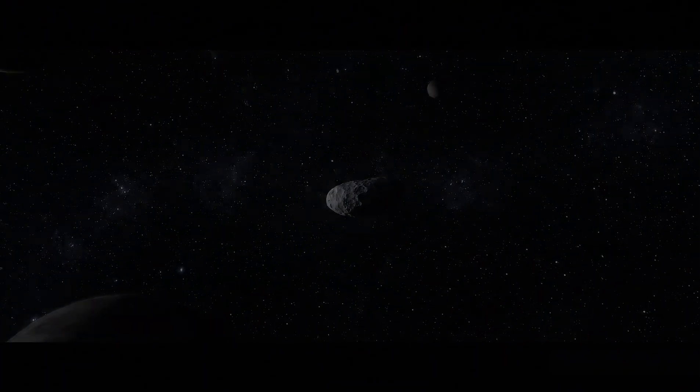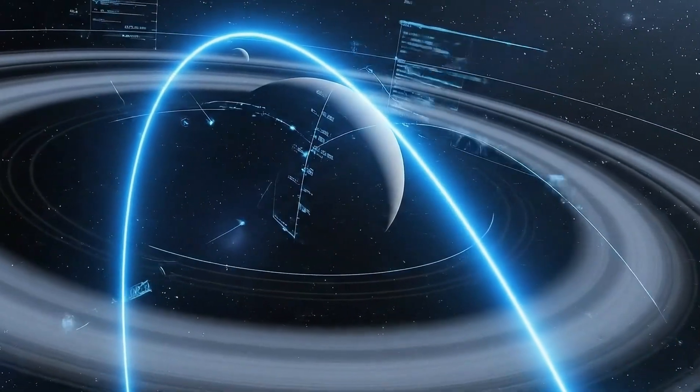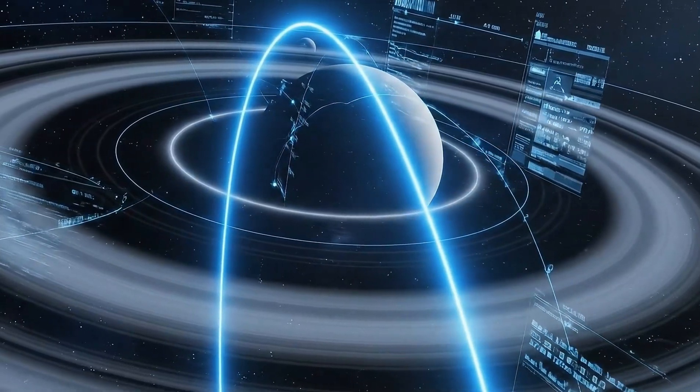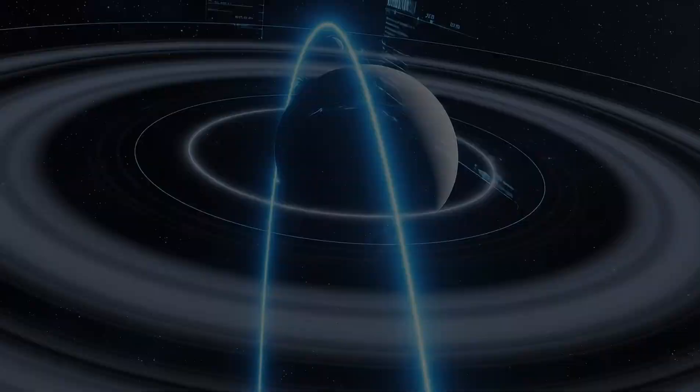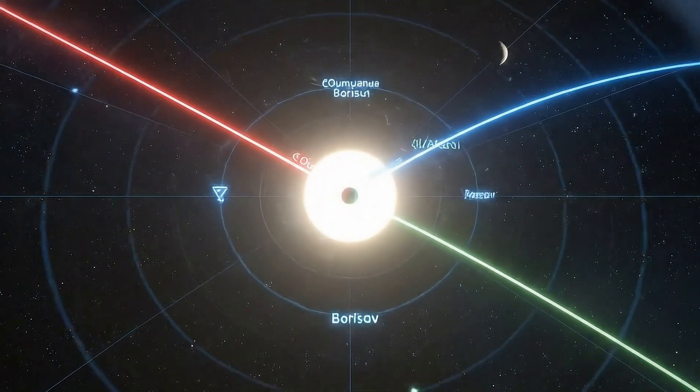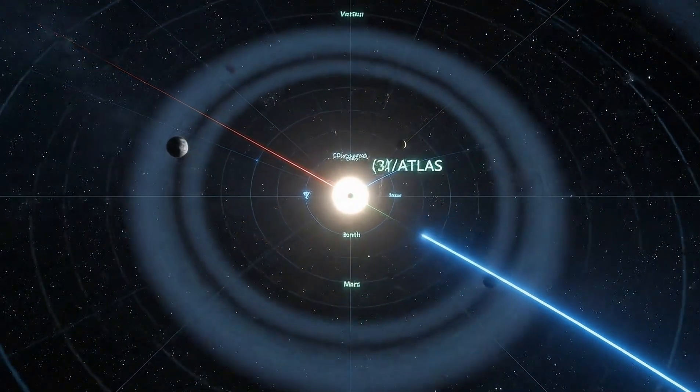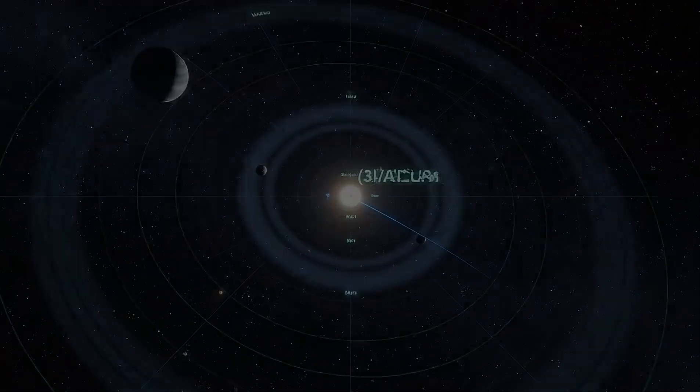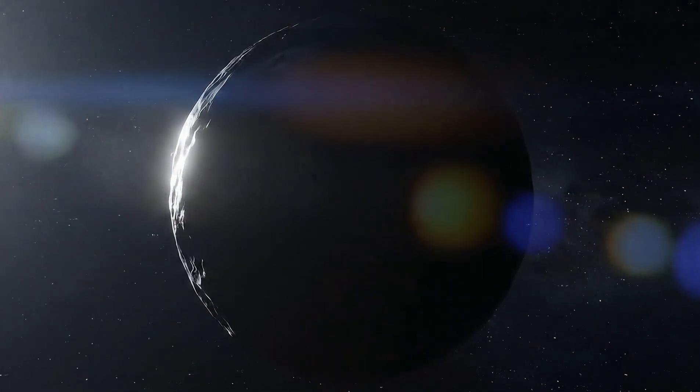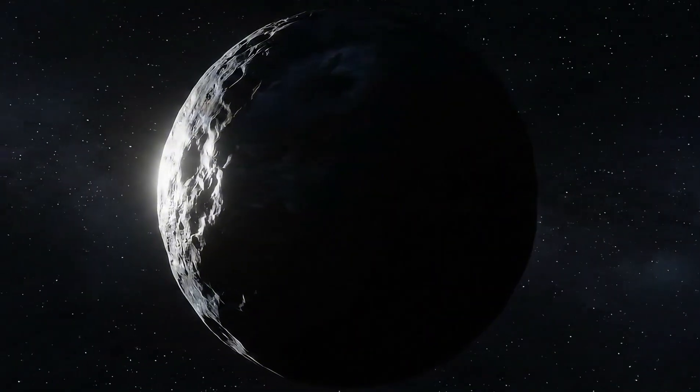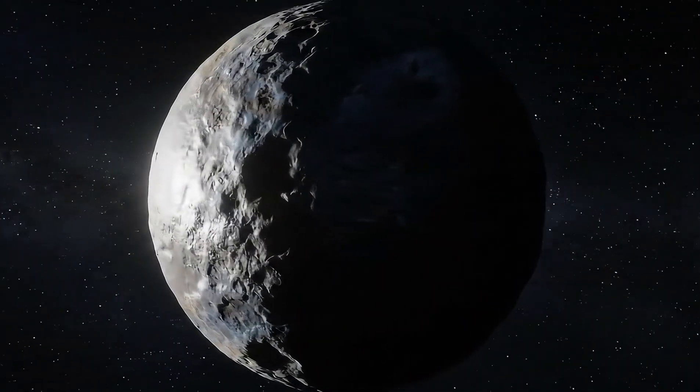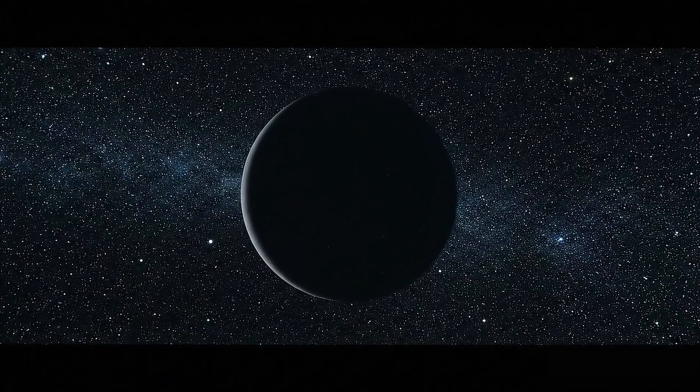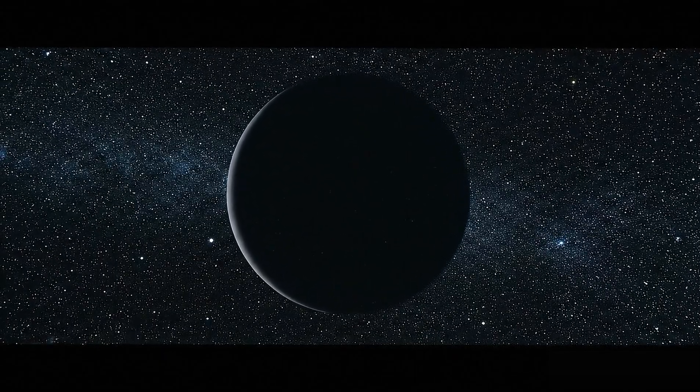So what exactly is 3i Atlas? Most astronomers agree it's a fragment of something ancient—maybe a comet that formed in a long-dead system, or an asteroid ejected from the chaos of a supernova billions of years ago. But that's not the full story. Its hyperbolic trajectory is sharper than expected, meaning it was likely ejected violently. And then there's the light. Its surface reflects sunlight in unpredictable ways: bright one moment, invisible the next.